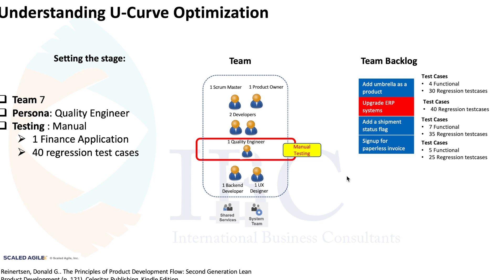Hello everybody, welcome to this short segment on understanding and demystifying the U-curve optimization, which is a very good read from Don Reinertsen's 'The Principle of Product Development Flow.' To set the stage, we have a team of seven with a quality engineer who has manual testing to deal with for a financial application. Every time a scope goes through, he has to do 40 regression test cases. The team backlog currently has four user stories including enablers, with associated test cases listed side by side.